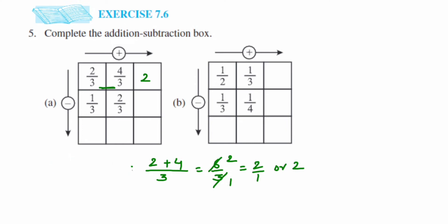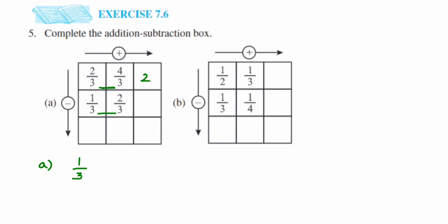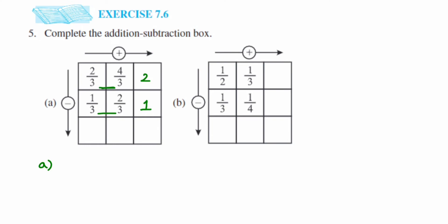Next, we add 1/3 and 2/3. Again, these are like fractions, so we add the numerators: 1 plus 2 equals 3, giving 3/3. Cancelling, 3 ones are 3, so the answer is 1. That completes the addition for the first box. Now we go downwards for subtraction.